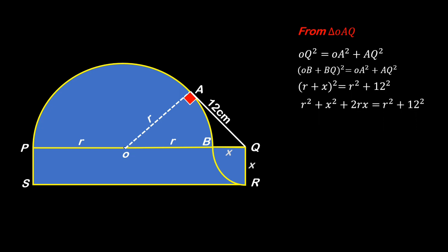We will get r² + x² + 2rx = r² + 12². So r² on left and right will be cancelled out.